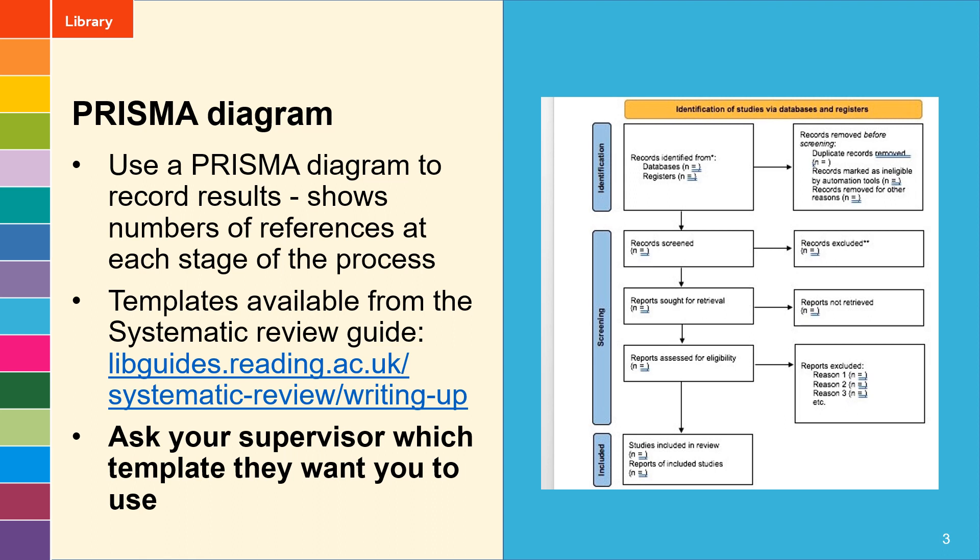Coming down to the screening section of this diagram, the records screened is the total number you had in your library after deduplication. Records excluded is the ones that are in your exclude group once you've done that first level of filtering on title and abstract.